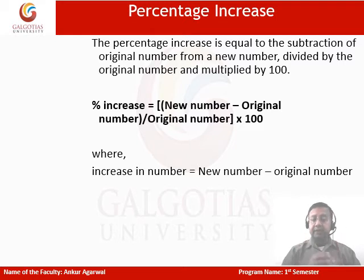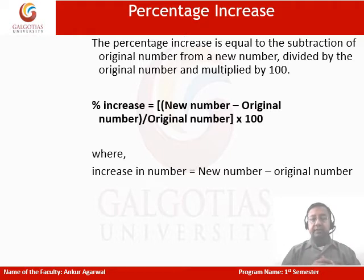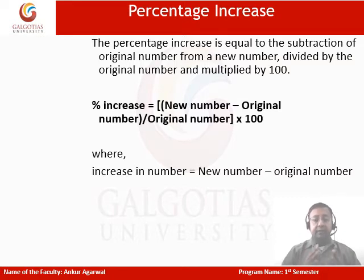What is percentage increase? The percentage increase equals the subtraction of the original number from the new number, and this difference is divided by the original number and multiplied by 100. So: percentage increase = ((new number − original number) / original number) × 100, where the increase in number is new number minus original number. This is the way we can find the percentage increase for a given set of data.